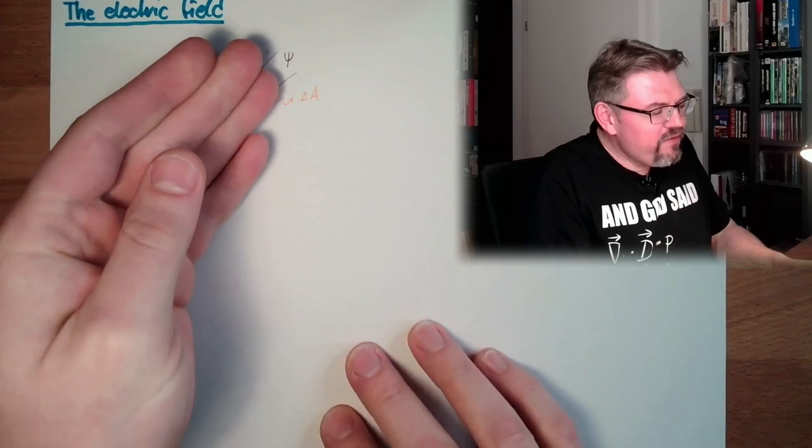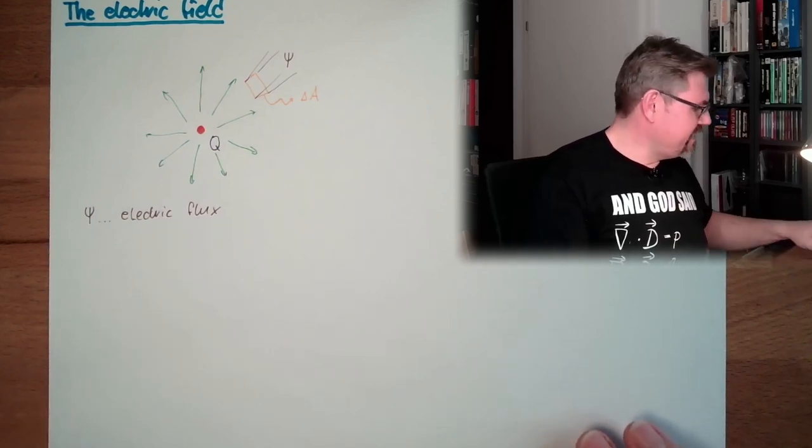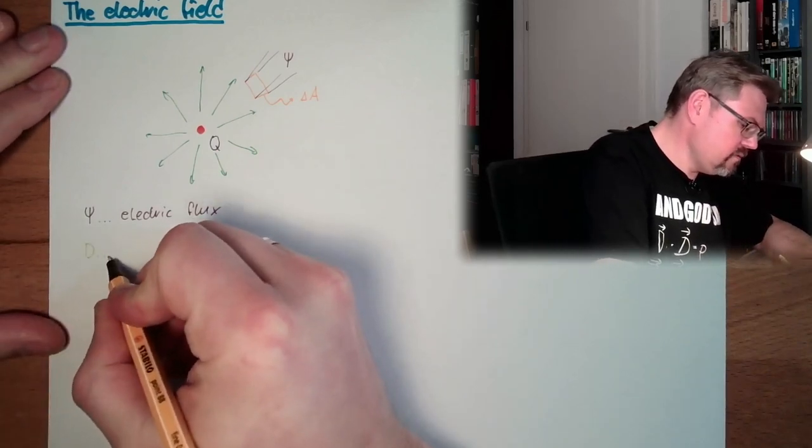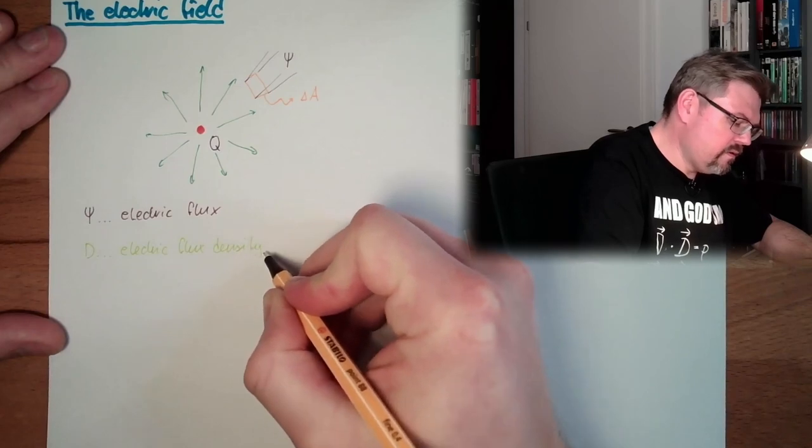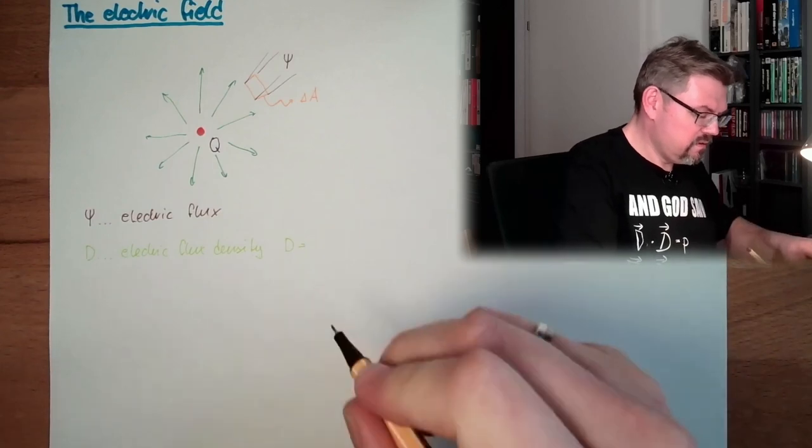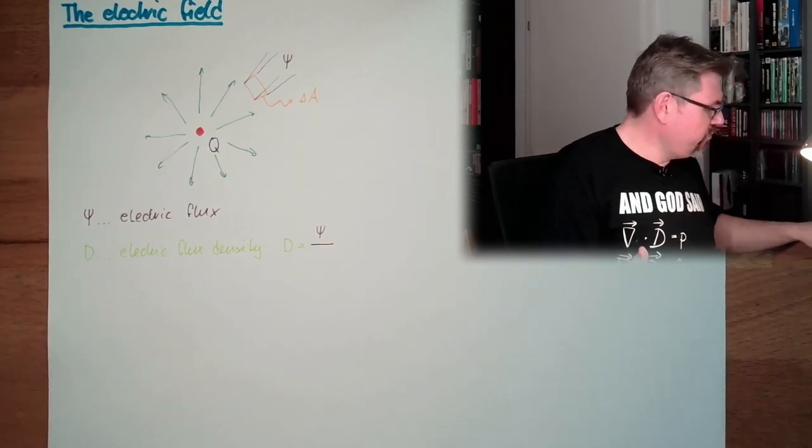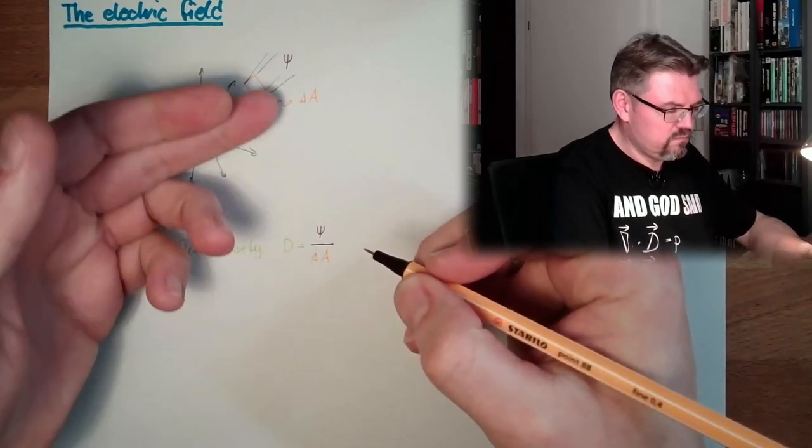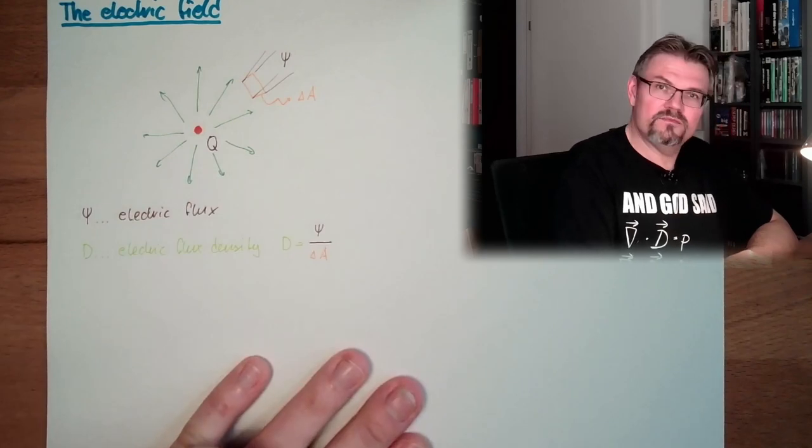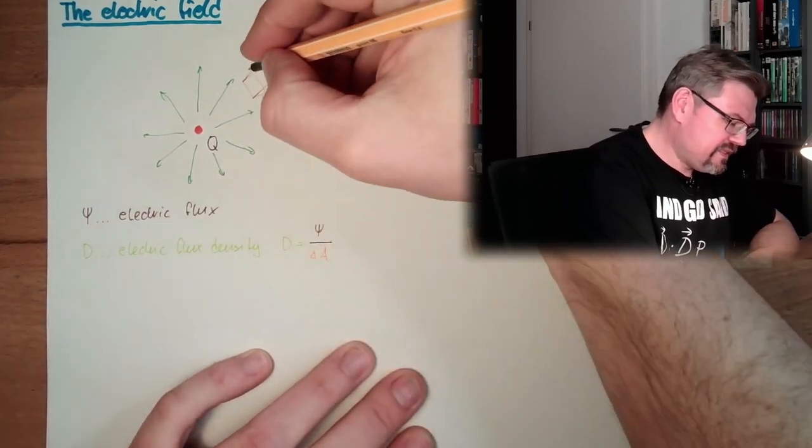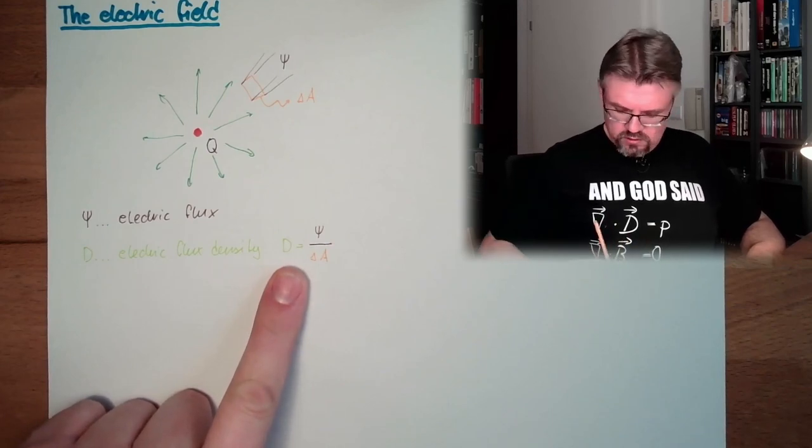All right, electric flux. And this electric flux shining through this little area here has a certain density. So there is a density called D, it's the electric flux density. And it's clear that D equals the flux Psi divided by the area where it's shining through, this is delta A. This is the density, how dense the flux is there.